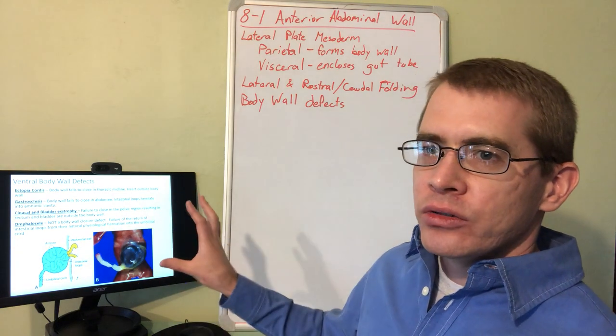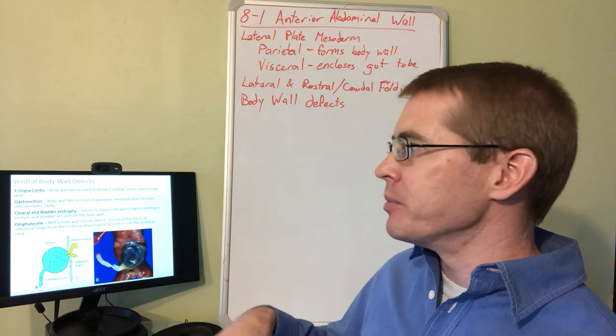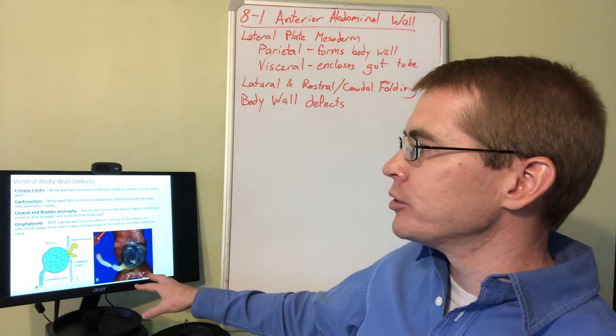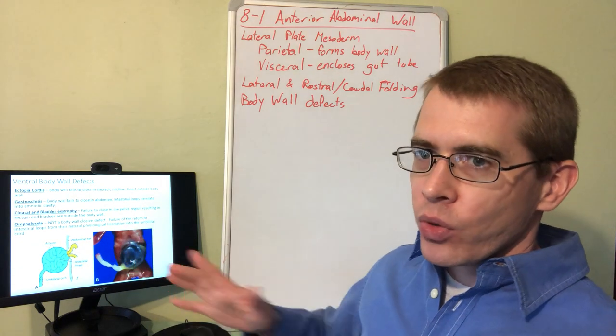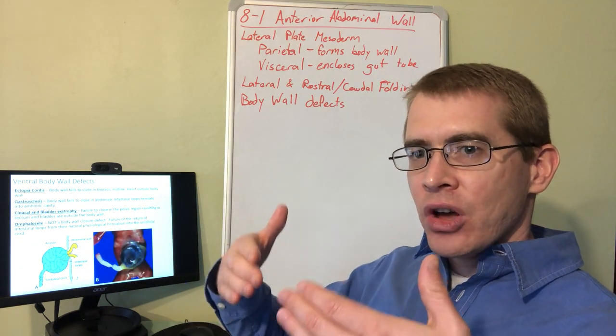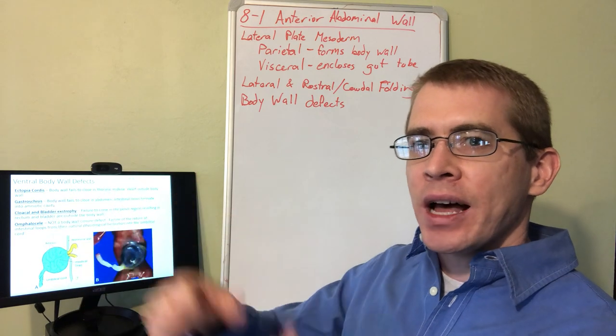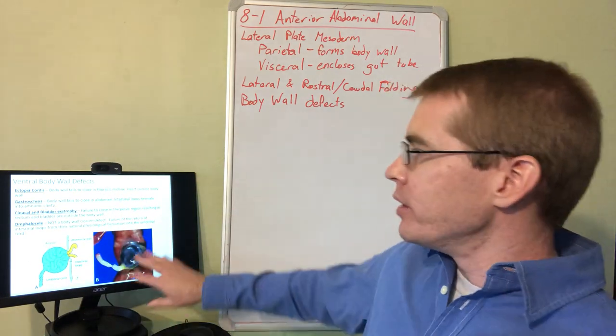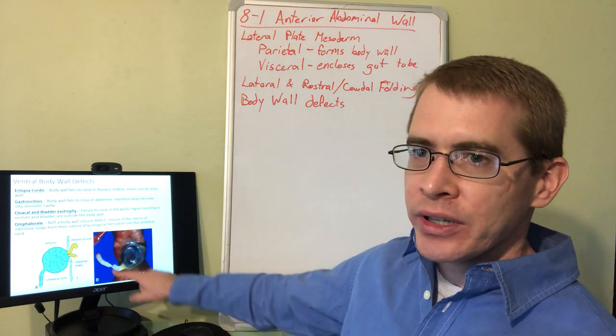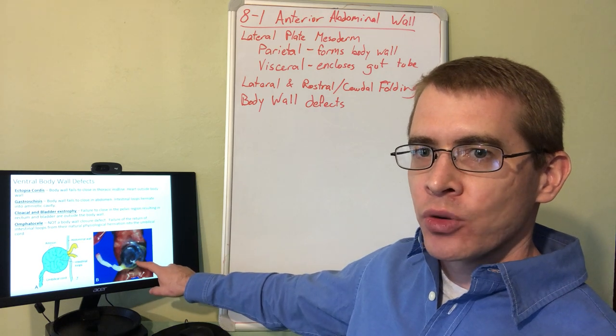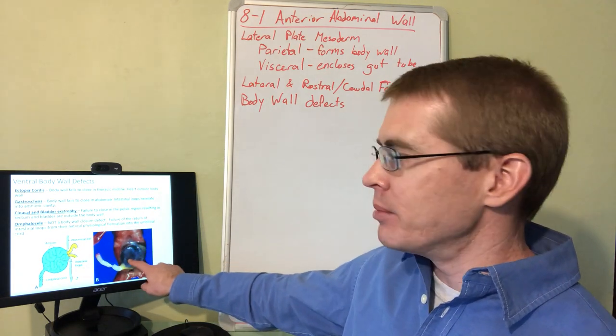Here are some of those defects that occur if the body wall closure doesn't happen as programmed. The most notable is gastroschisis, where the body wall fails to close anteriorly over the yolk sac. Thus, the gut forms and remains outside of the anterior abdominal wall. On my right of this slide, you can see an example of a fetus that had this anterior abdominal wall defect, gastroschisis, where the gut tube is actually forming outside the body wall.